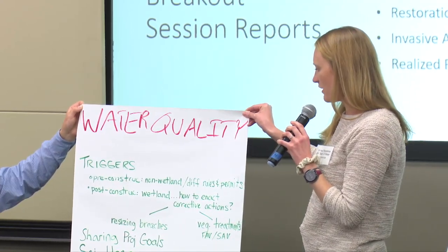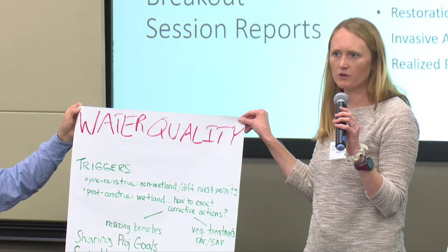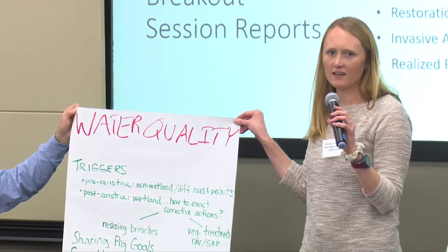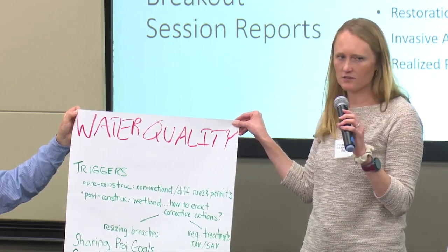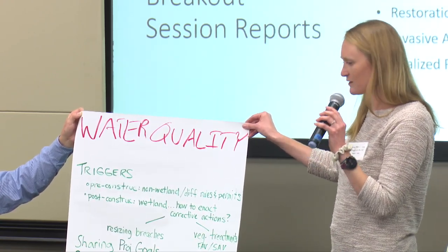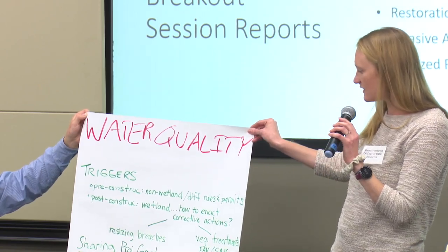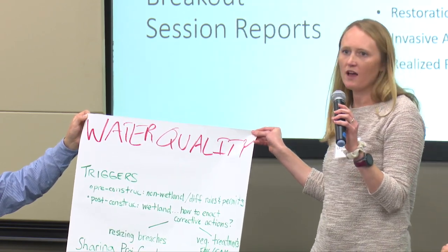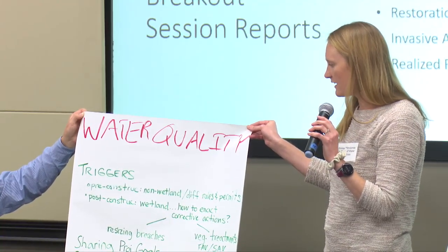We also spoke about sharing project goals. Oftentimes sharing data is a big thing that we discussed, but also the actual project intentions — for example, FERP created Tule Red, but what were FERP's intentions with Tule Red? Any researcher can go there and do a project, but sometimes it would be informative to understand the reasoning behind it. So making sure that sort of information is also shared in addition to the data. DSC is here and they have the science action strategy, and there's going to be an upcoming proposal for funding. We spoke about the different topics at the top of the list and how they relate.